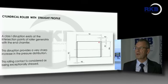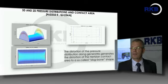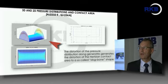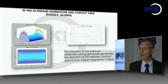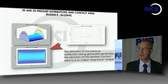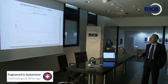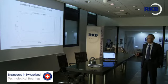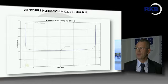The pressure distribution for the straight profile is shown here in 3D and in two dimensions. The distortion of the pressure distribution generates distortion of the Hertzian contact area into the so-called dog bone shape. There is a very large increase of pressure at the end. In the detailed 2D pressure distribution, the median pressure is about 1000 MPa, but at the end it is near 3000 MPa — three times more.